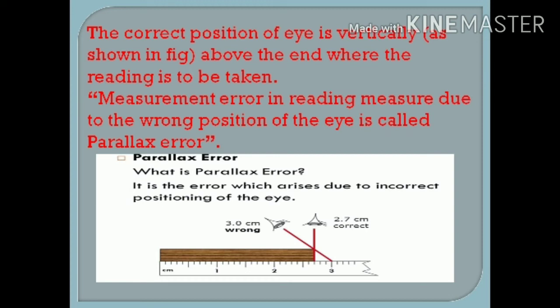If you take measurement from the vertical position, then it comes out to be 2.7 cm which is correct. But in the other case, the position of eye is different, so measurement comes out to be 3 cm which is totally wrong, because the accurate length of an object is 2.7 cm. This error in measurement arises due to wrong position of the eye. This is called parallax error.